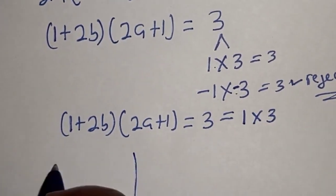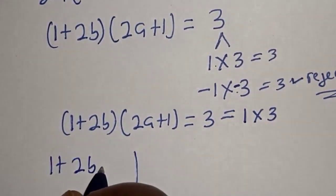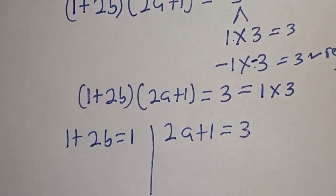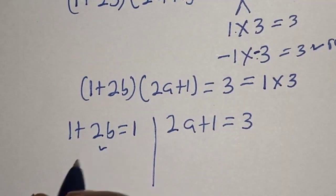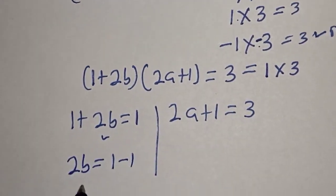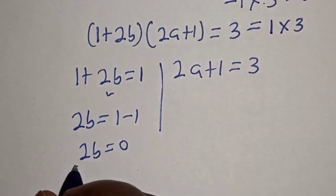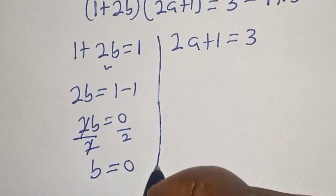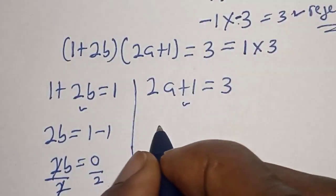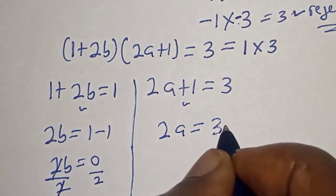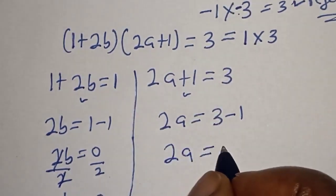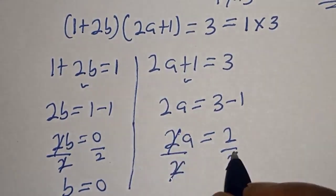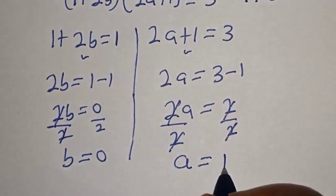Therefore there are two cases here. Case 1: 1 plus 2b is equal to 1, or case 2: 2a plus 1 is equal to 3. Working with case 1: 1 plus 2b equals 1, so 2b equals 1 minus 1, giving 2b equals 0, and dividing both sides by 2 gives b equals 0. From case 2: 2a plus 1 equals 3, so 2a equals 3 minus 1, giving 2a equals 2, and dividing by 2 gives a equals 1.